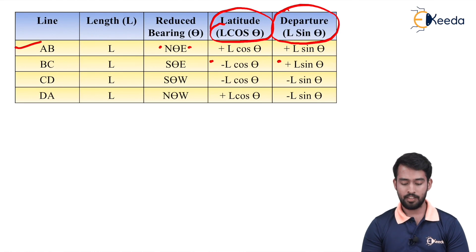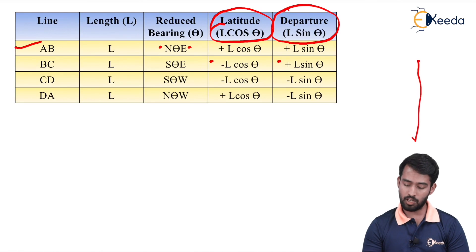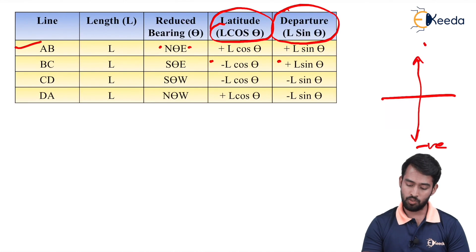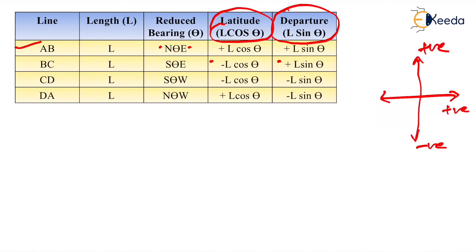For the next line CD, the bearing is south-west. Towards south, the latitude is negative; towards north it is positive. For departure, east is positive and west is negative. So for CD — south-west — south is negative and west is also negative. For DA — north-west — north is positive and west is negative.